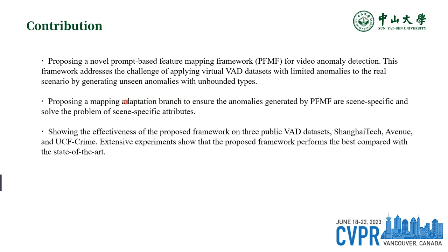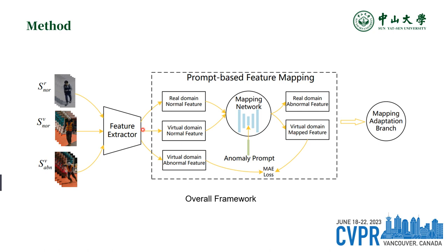Furthermore, a mapping adaptation branch has been proposed to ensure the anomalies generated by the feature mapping framework are scene-specific and solve the problem of scene-specific attributes. To validate the effectiveness of the proposed framework, extensive experiments were conducted on three public VAD datasets: ShanghaiTech, Avenue, and UCF-Crime. The results show that the proposed framework performs best compared with state-of-the-art approaches.